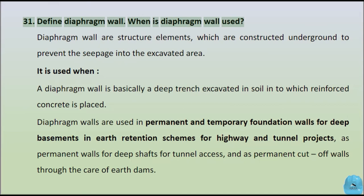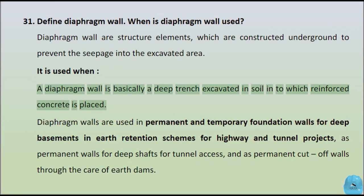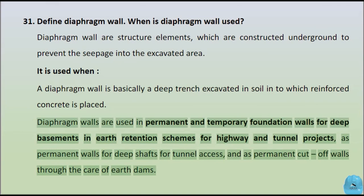Question 28: Define diaphragm wall. When is diaphragm wall used? Diaphragm walls are structural elements which are constructed underground to prevent seepage into the excavated area. A diaphragm wall is basically a deep trench excavated in soil into which reinforced concrete is placed. It is used as permanent and temporary foundation walls for deep basements, in earth retention schemes for highway and tunnel projects, as permanent walls for deep shafts for tunnel access, and as permanent cut-off walls through the core of earth dams.